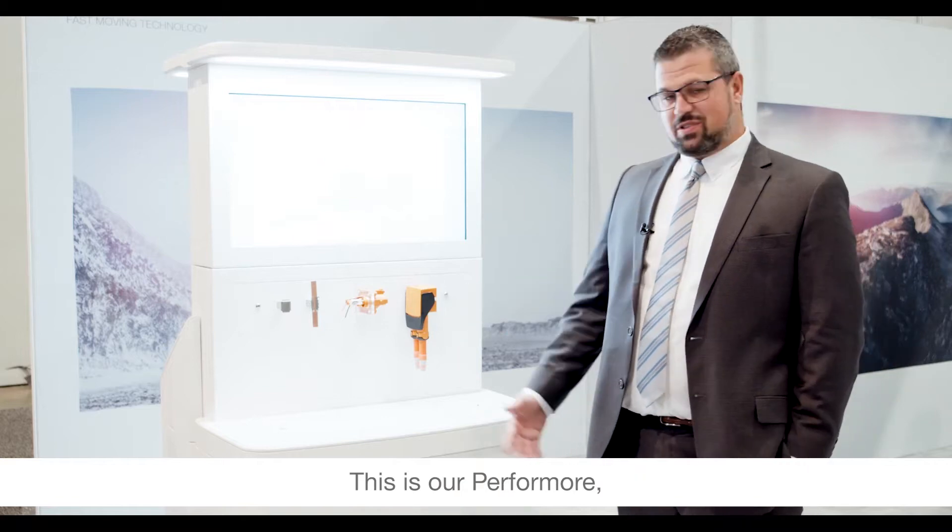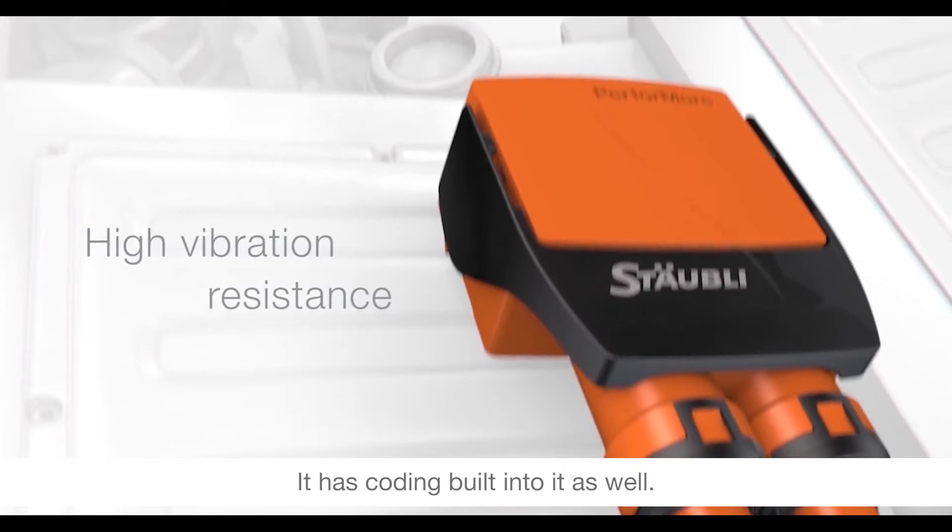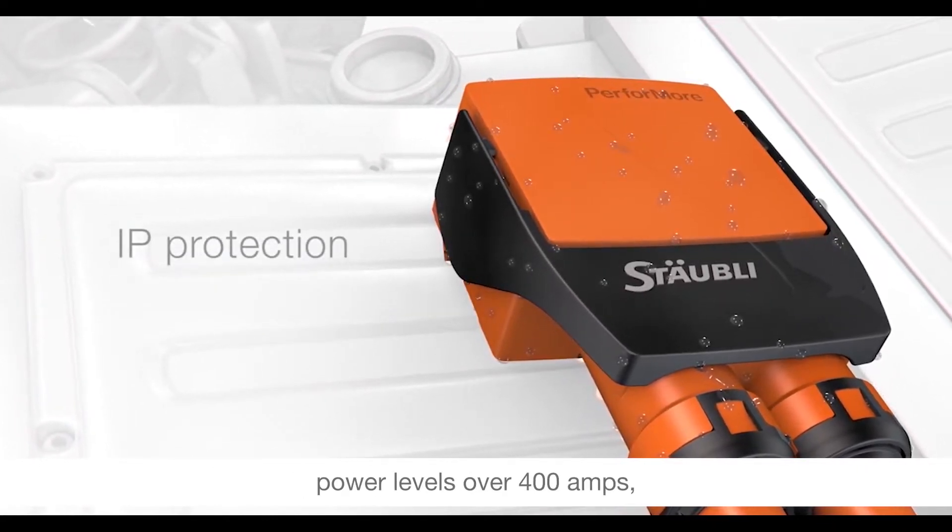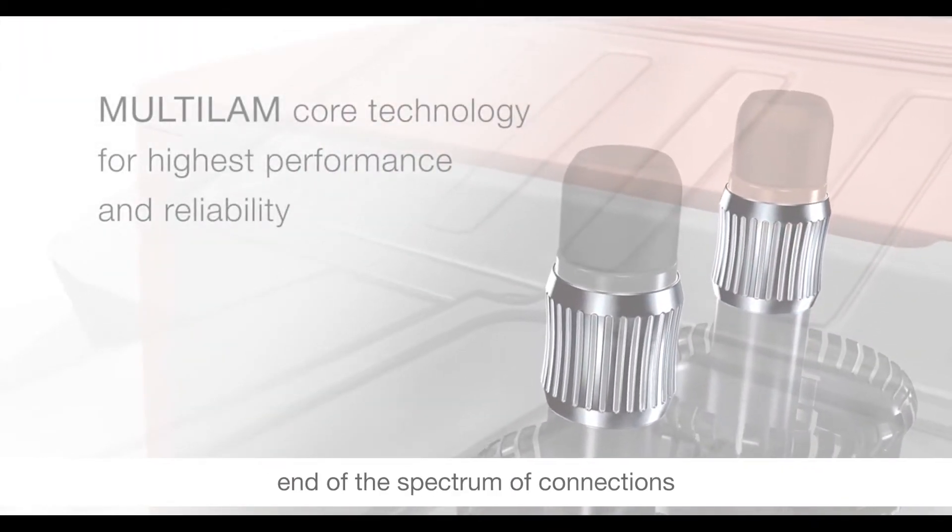This is our Performore, the orange high voltage connector. It's got a built-in HVIL, coating built into it, two-stage unlock, and it's capable of power levels over 400 amps, which are typically on the higher end of the spectrum for connections like this.